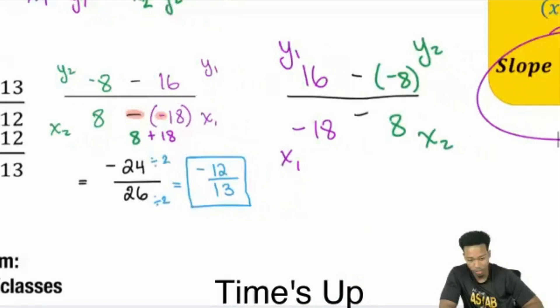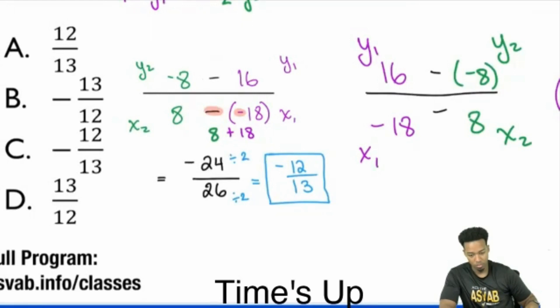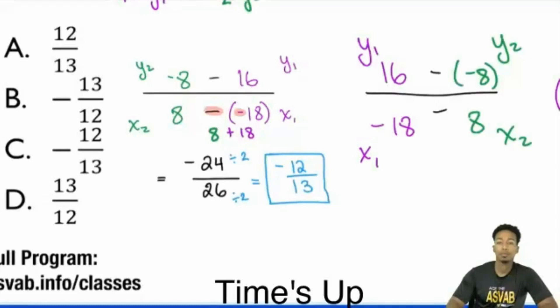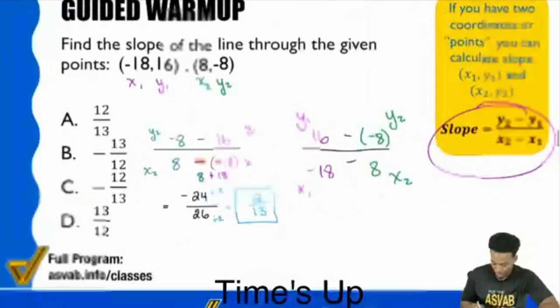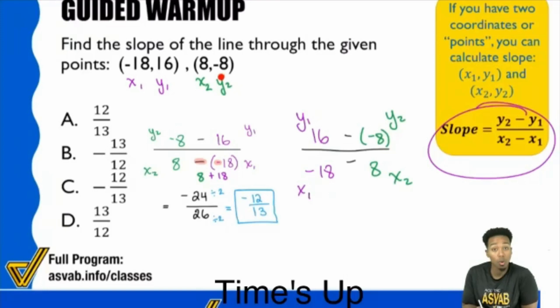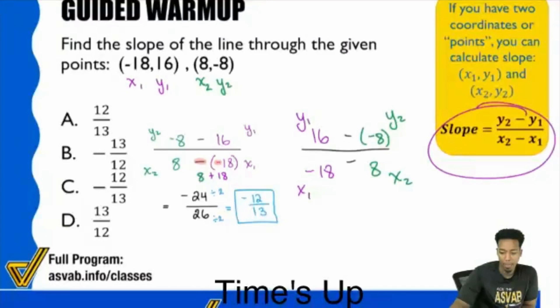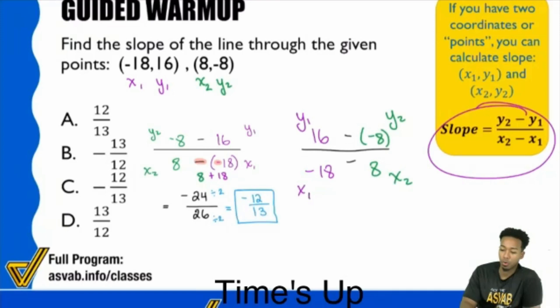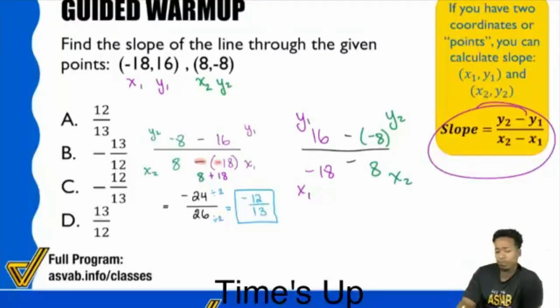Mohamed asks: do we have three formulas or only one? Rise over run is the intuitive way to think about it. The formula is just saying subtract in the same order — y2 minus y1 over x2 minus x1, or y1 minus y2 over x1 minus x2. Mohamed also asks about y = mx + b — that's slope-intercept form, which is a follow-up class. I'll cover it next month.